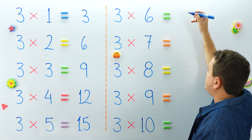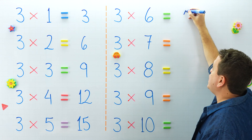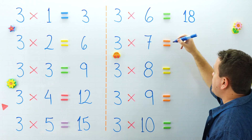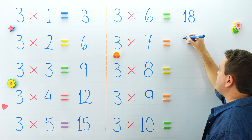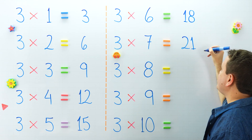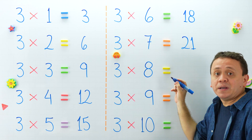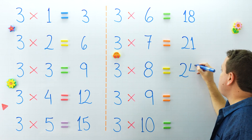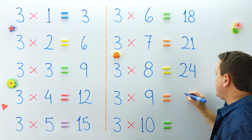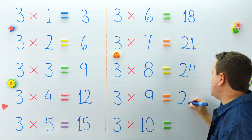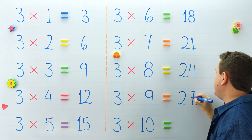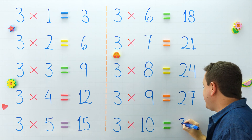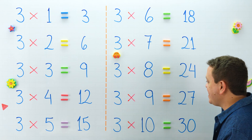Over here, 3 times 6 equals 18. That's right. 3 times 7 equals 21. And 3 times 8 equals 24. 3 times 9 equals 27. The last one: 3 times 10 equals 30. That's right.